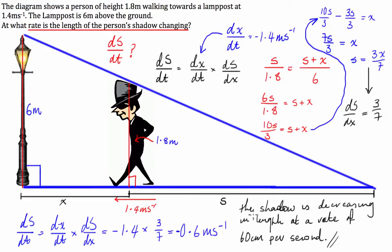And once you've done that, it's always good to interpret what the number is that you've spat out. In this case, the shadow is decreasing in length at a rate of 60 centimeters per second. Sorry about my handwriting there, it's been a long day, but I hope this answer helped you with this question.